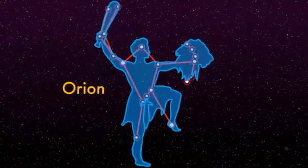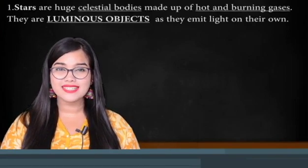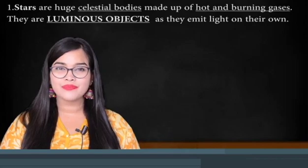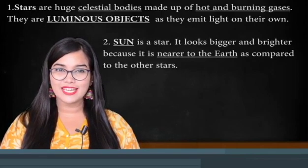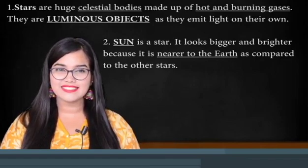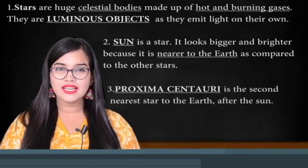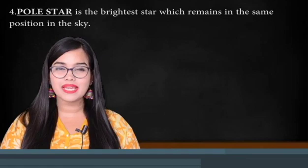Let's quickly summarize what we have studied so far. Number one: stars are huge celestial bodies made up of hot and burning gases — they are luminous objects as they emit light on their own. Number two: the sun is a star; it looks bigger and brighter because it is nearer to the earth compared to other stars. Number three: Proxima Centauri is the second nearest star to the earth after the sun. Number four: the pole star is the brightest star which remains in the same position in the sky.